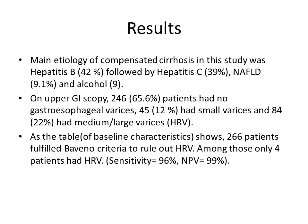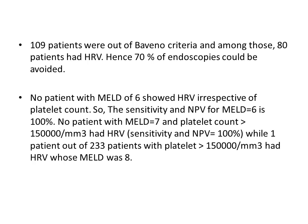From the results, 266 patients fulfilled the Bavino 6 criteria to rule out high-risk varices. Among those, only 4 patients had high-risk varices, giving a negative predictive value of 99%. In hepatitis B and C patients, transient elastography was done before starting antiviral therapy. 109 patients were outside Bavino 6 criteria, and among those, 80 patients had high-risk varices. Overall, 70% of endoscopies could be avoided.